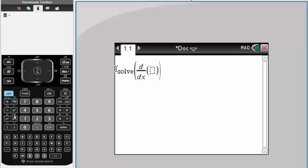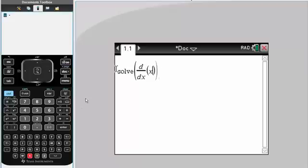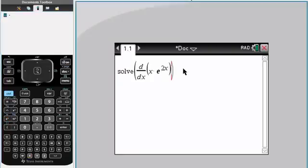So we would write what we had. So we had x times e raised to the 2x. We simply write equal zero comma x like this and this would give us our critical value.